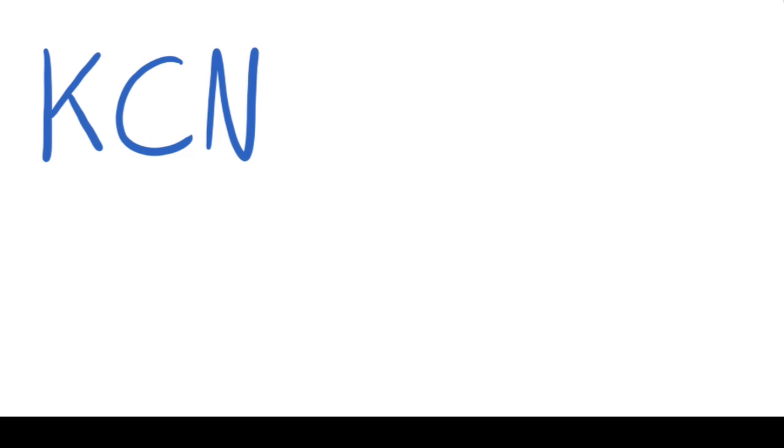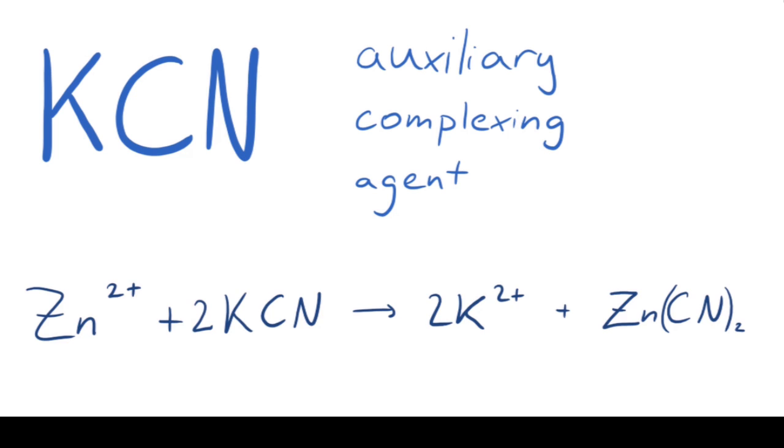Potassium cyanide is an auxiliary complexing agent that binds ions other than magnesium and calcium. In the experiment, it has the purpose to complex with any other ions so they don't interfere with the titration.